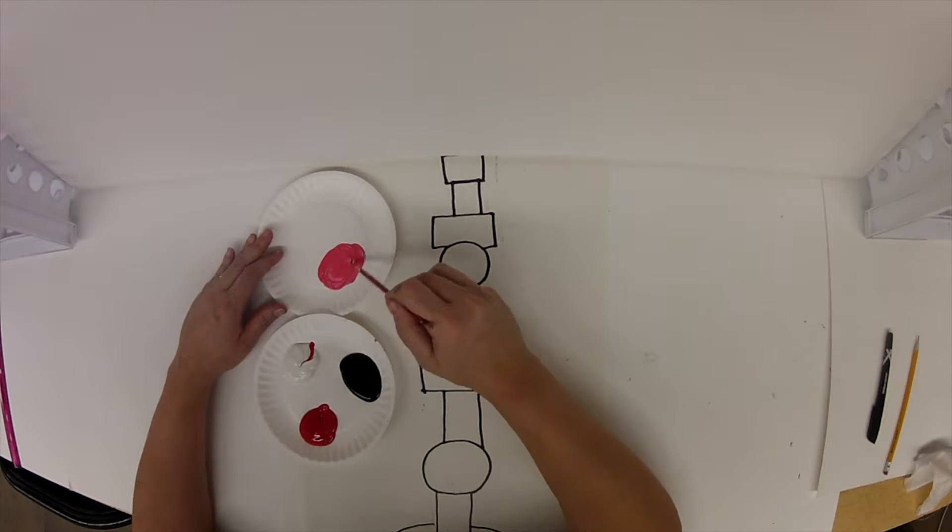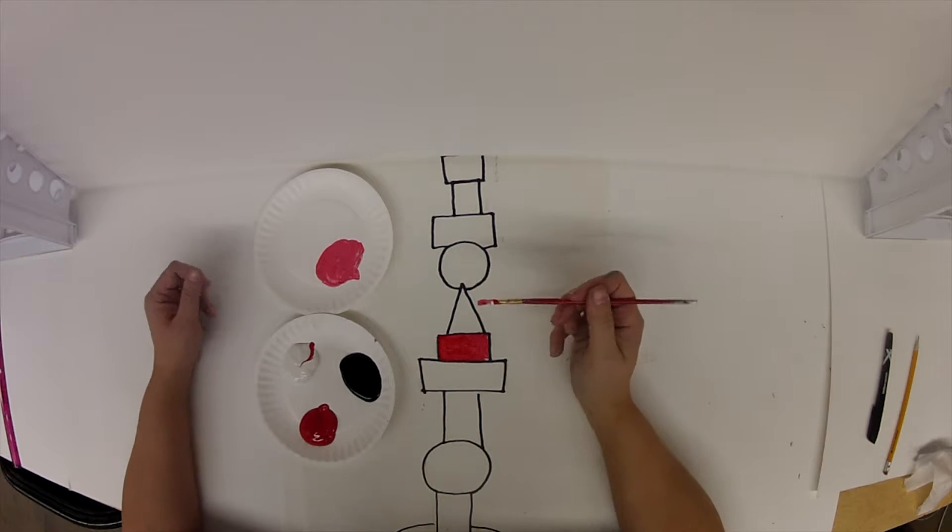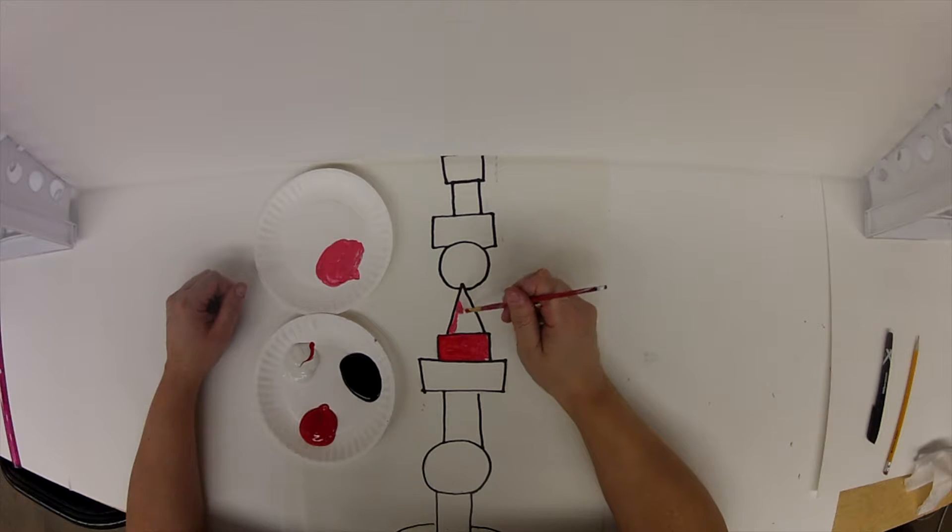If you didn't know by now, white and red make pink. So I've got a nice color tint of pink right now, and I'm just going to paint my next shape on my totem.